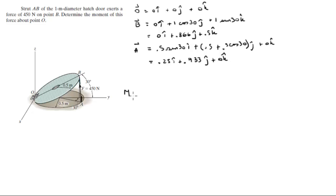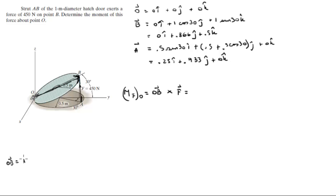We need to find the moment that the strut creates about the origin. It equals the position vector from O to where the force is applied, crossed with the Cartesian vector form of the force. OB is easy to find — it's B minus O, but since O is the origin, it's just B: 0i + 0.866j + 0.5k.